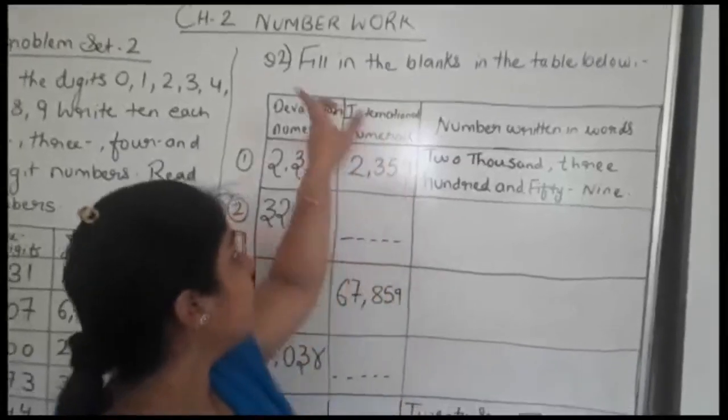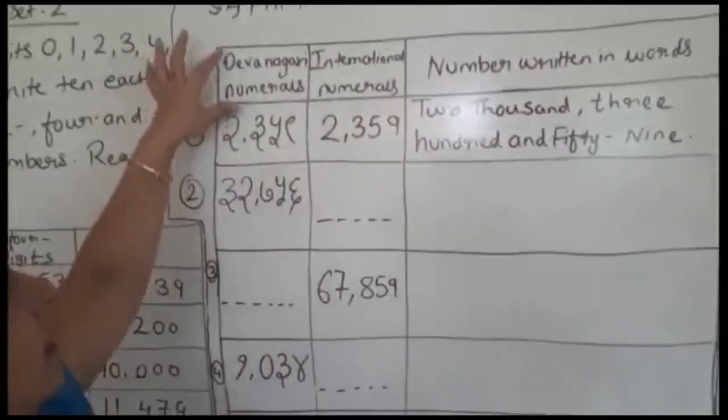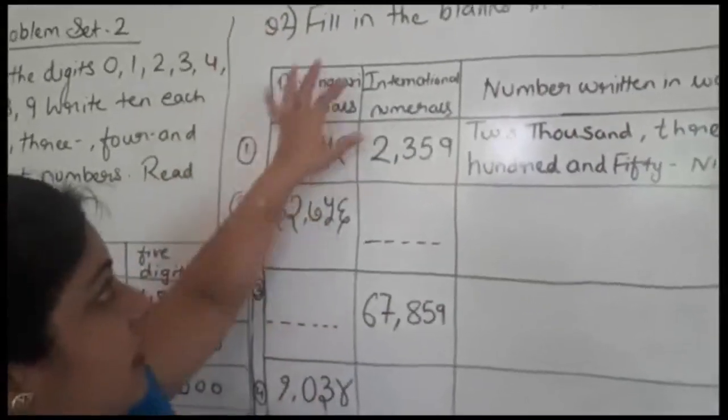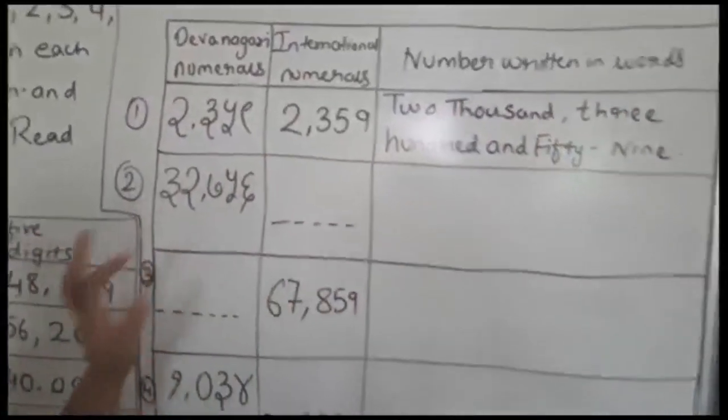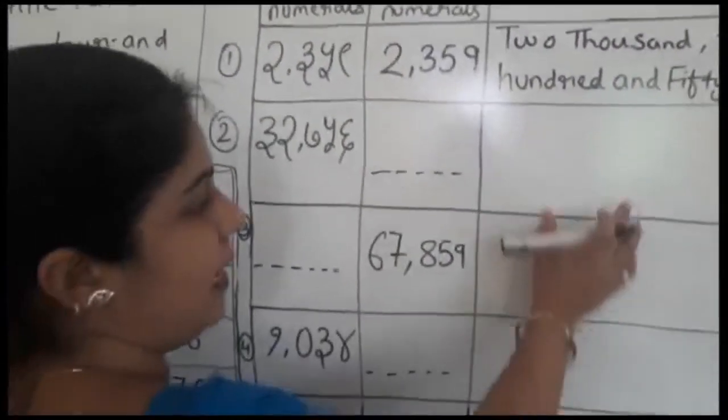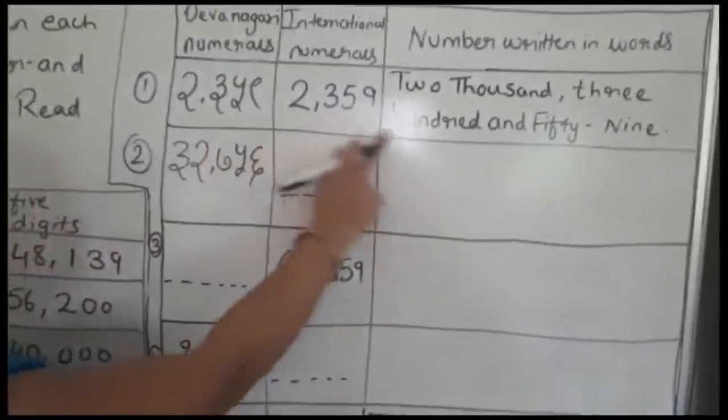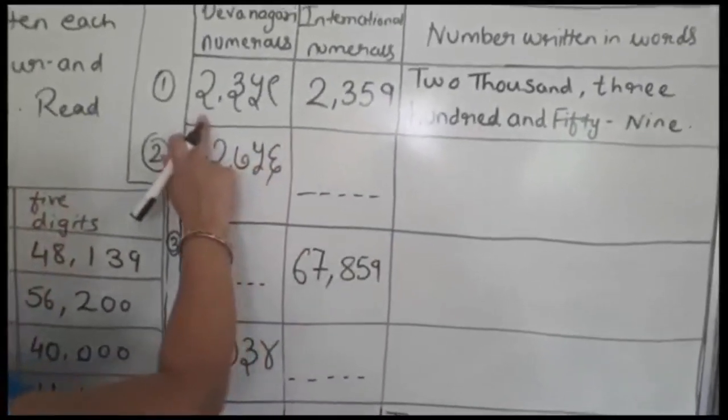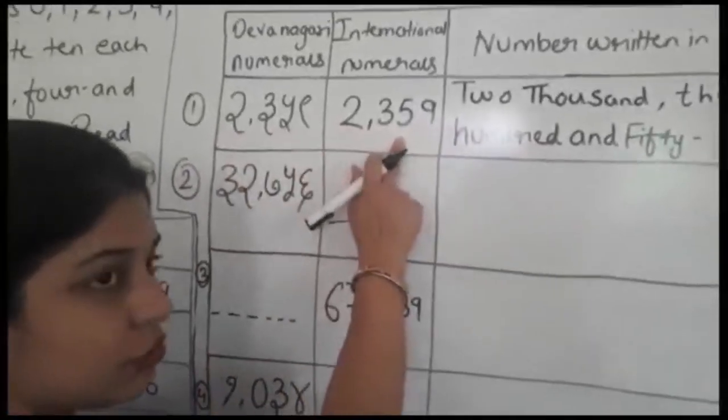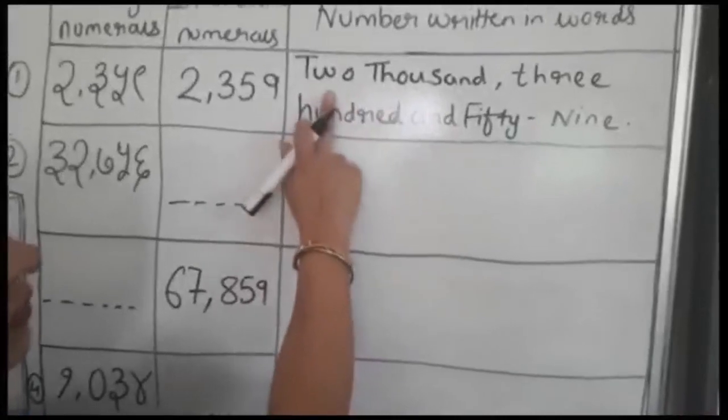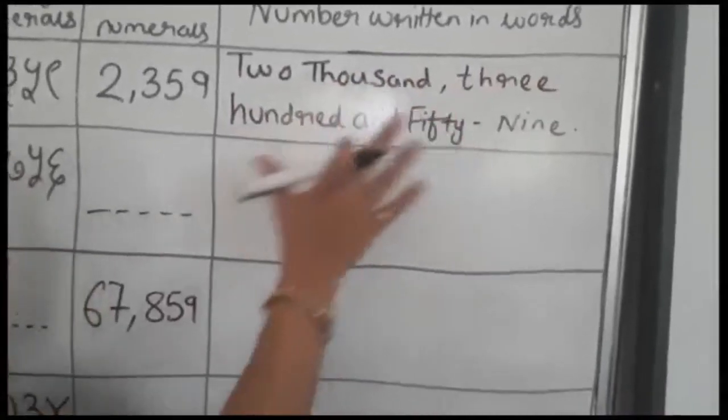Question number 2 is fill in the blanks in the table below. Here one table is given. First given is Devnavi numerals, then international numerals, then numbers written in words. Some parts are kept blank as per the textbook. The first one is done for you, like 2,359. In Devnavi they have written, international also they have written. In words they have given: two thousand, three hundred and fifty-nine.